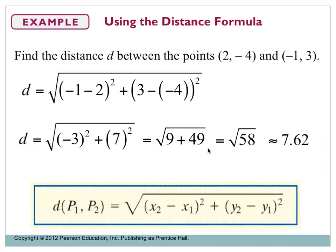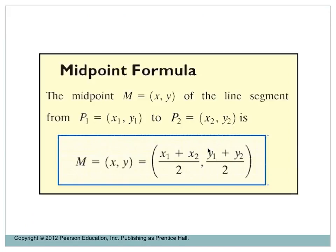That's how you use the distance formula. Now let's look at the midpoint formula. If we have two points P₁ = (x₁, y₁) and P₂ = (x₂, y₂), the midpoint M is the point in the middle between the two. We're adding instead of subtracting, with no squaring or square roots. We add our x-coordinates and divide by 2, add our y-coordinates and divide by 2, and those give us our midpoint.